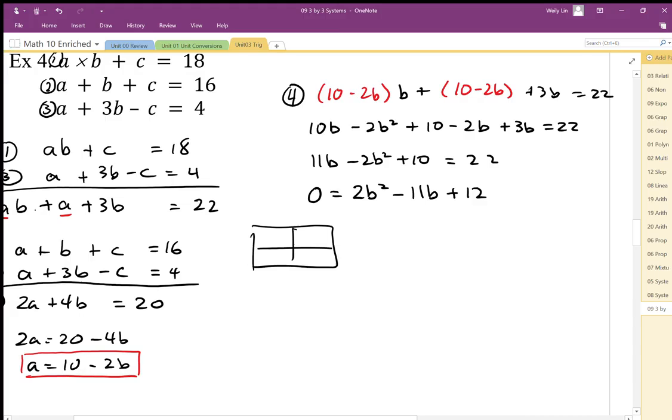And I'm going to factor this quadratic. So to factor this quadratic, I have 2b squared plus 12. This diagonal product is 24b squared. So I need it to add up to negative 11b and multiply to 24b squared. Well, that's going to be negative 8b, negative 3b. And once I get this, then I can factor.